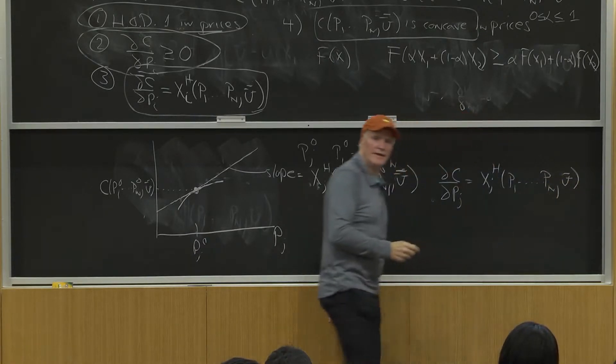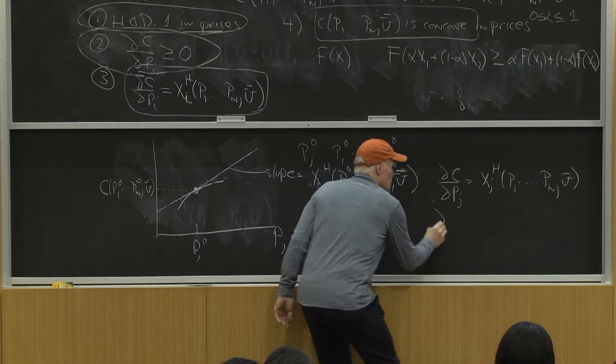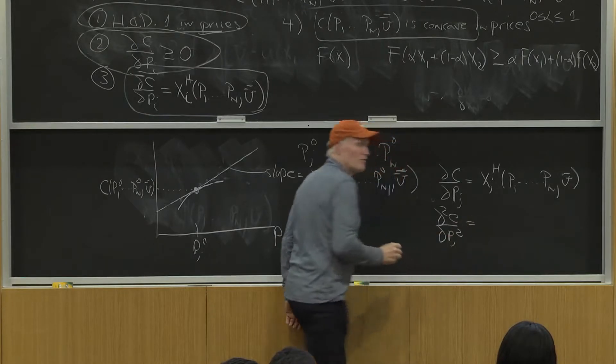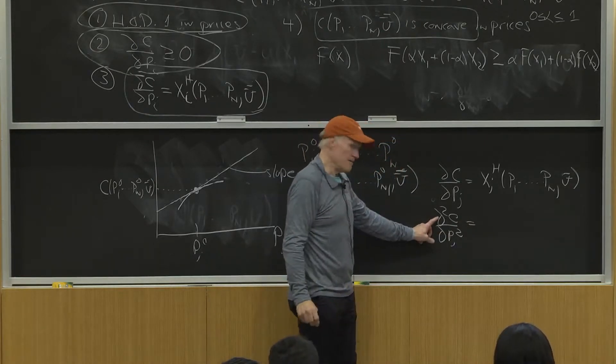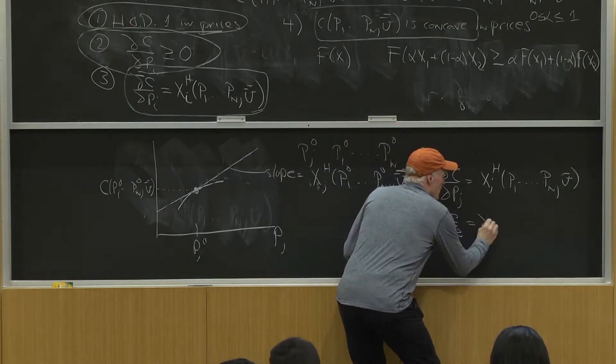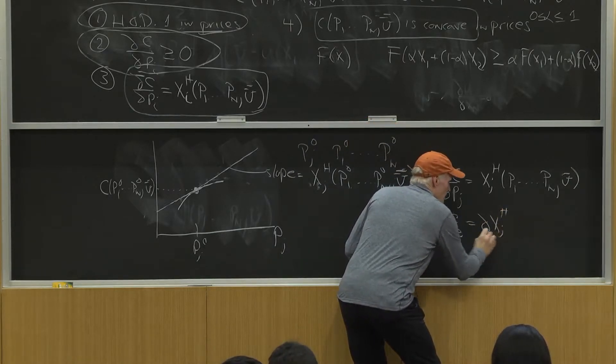You agree with that, right? So then ∂²C/∂PJ², which is how curved it is, equals ∂XJH/∂PJ.